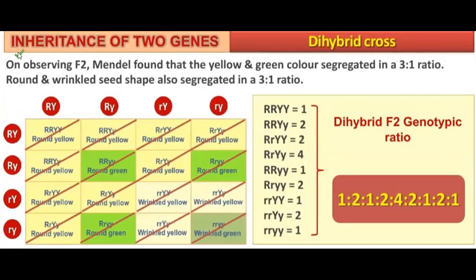Now, on observing F2, Mendel found that the yellow and green color segregated in a 3:1 ratio. Round and wrinkled seed shape also segregated in a 3:1 ratio — round was 3:1 and yellow was also 3:1. Now let us look at the genotypic ratio and what it is.